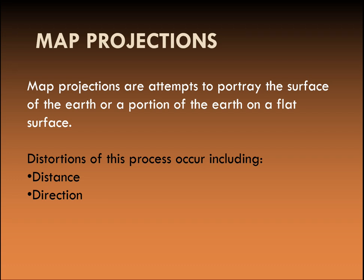Direction is also a distortion — north might not be straight north; it could be curved or at another angle, and we may not have perfect 90-degree angles. Scale is another distortion — it might differ in the Y direction versus the X direction. Area is also a distortion, meaning that shapes appear at different relative sizes compared to what they are on the ground.